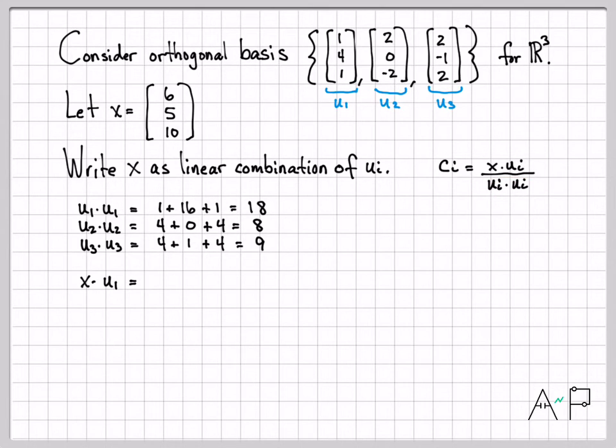What about the numerator? We need to compute x dotted with u₁, x dotted with u₂, etc. So let's go ahead and do that. So I'm going to take x dot with u₁ to start. So it's going to be 6 times 1 is 6, 5 times 4 is 20, 10 times 1 is 10. Add all that up, I get 36. And then we'll go through these last few computations a little quicker. Very simple dot products. So these are all my numerator terms.